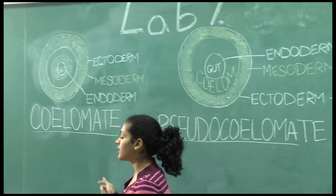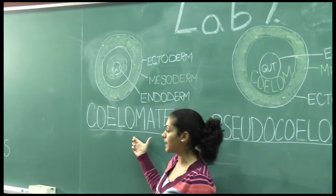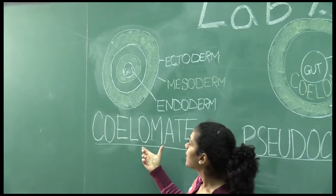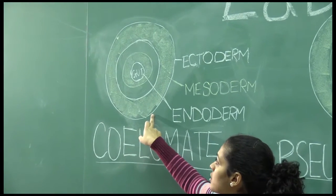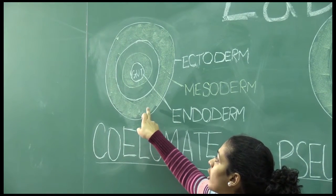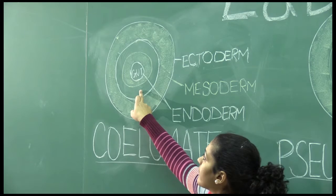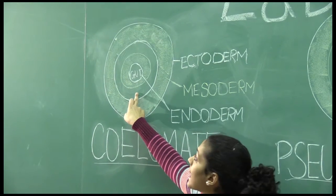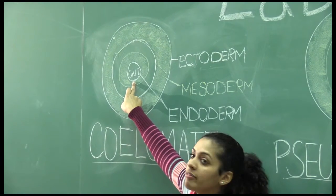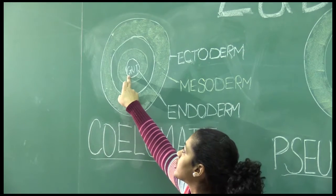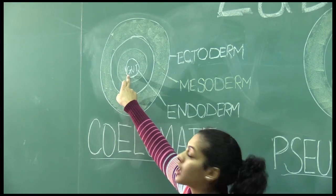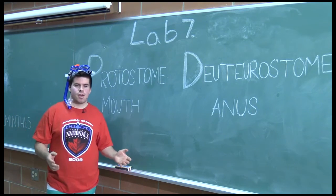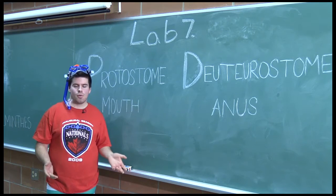As mentioned earlier, you have the coelomate — true coeloms. In this case, you have the ectoderm, followed by the mesoderm, then the fluid-filled or air-filled cavity, and then another layer of mesoderm before you reach the endoderm or gut tissue.